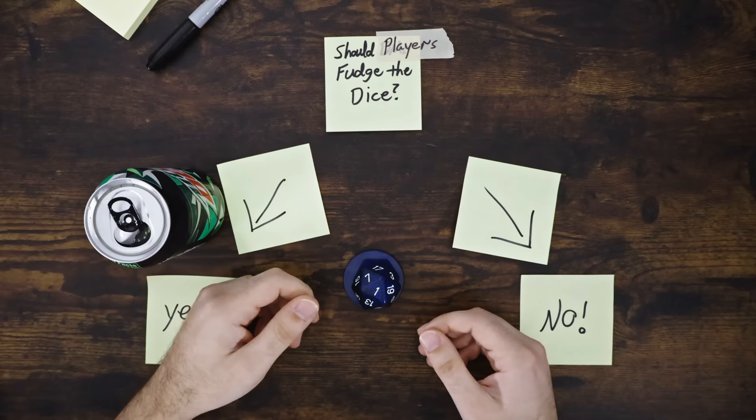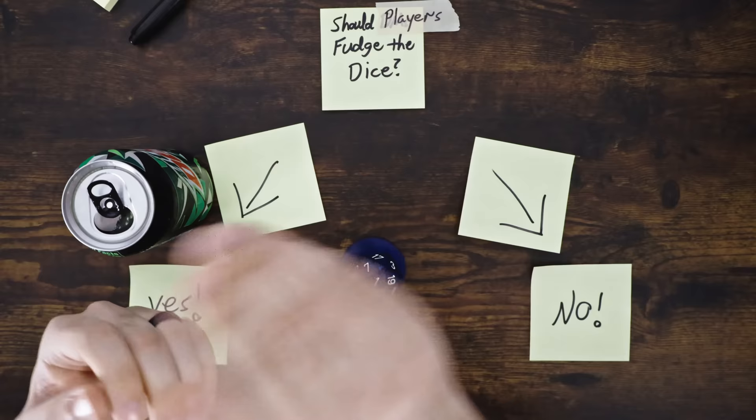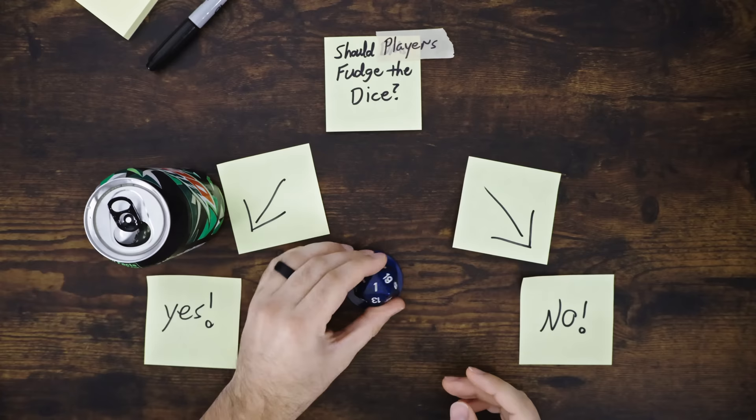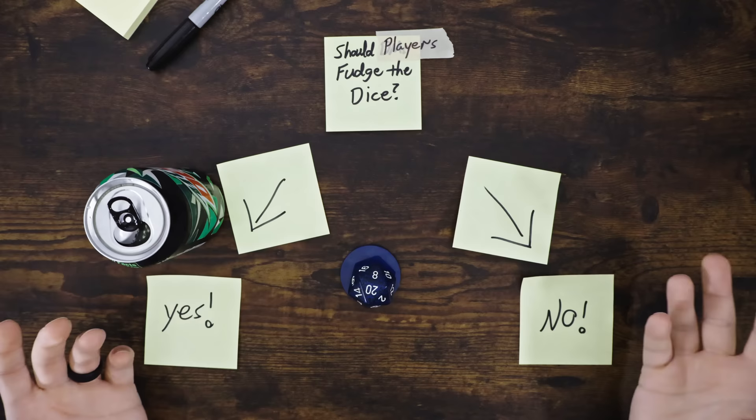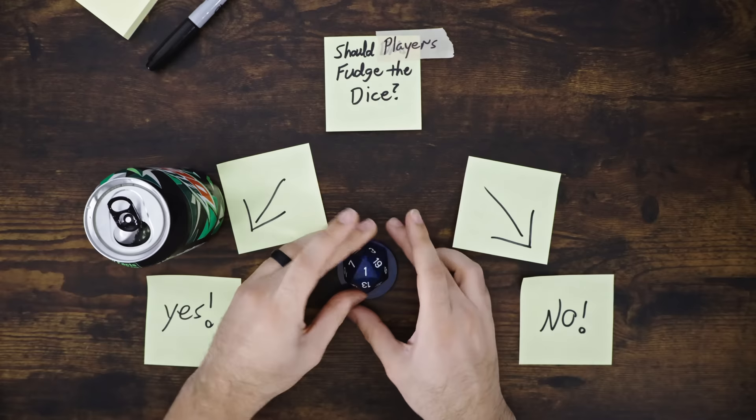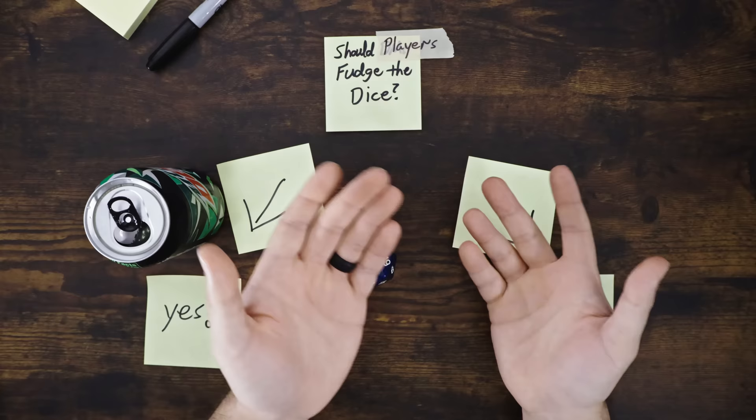If something bad happens to my character because of a dice roll I couldn't control, sure, that might not feel so good. But remember, not feeling good all the time is a good thing. If something bad happens to my character because of a dice roll I couldn't control, but the DM changed to save me, well that never feels good. But if something bad happens because of a dice roll I couldn't control, but I did have a way to alter it, but I already spent it this session on convincing that shopkeeper to sell me a sword for a couple bucks cheaper, well then I got nothing to blame but my own choices.